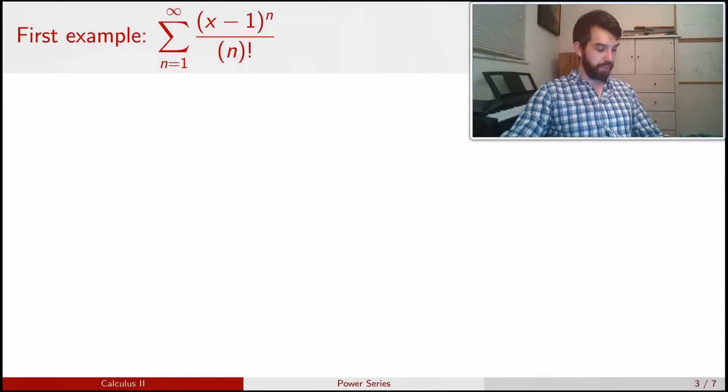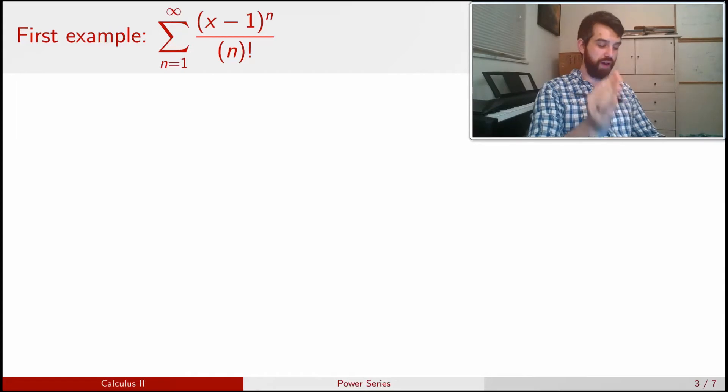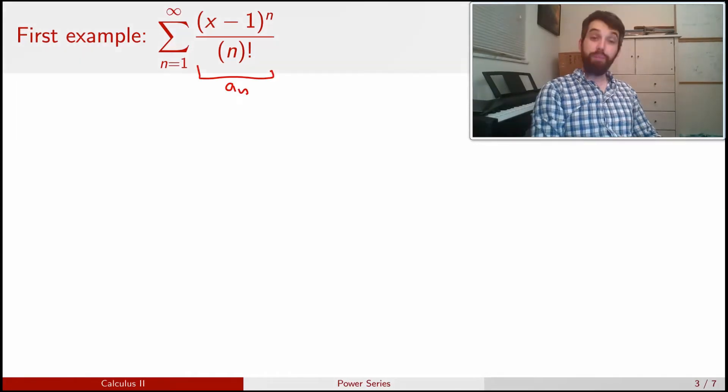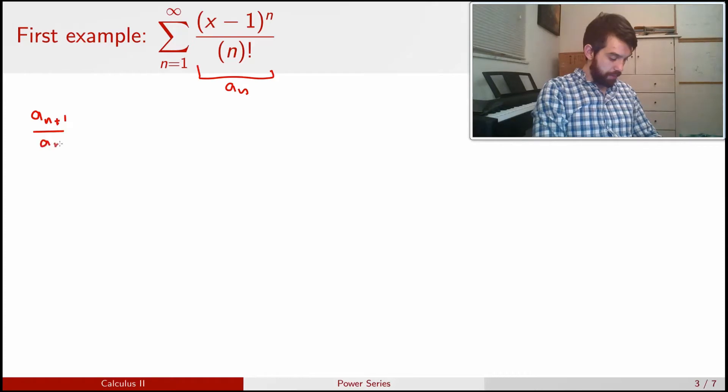So first off, I want to look at the sum of (x - 1)^n all divided by n factorial. So let me do the ratio test to try to determine convergence or divergence. I'm going to look at a_(n+1) divided out by a_n.